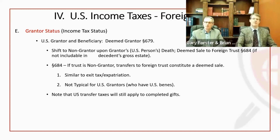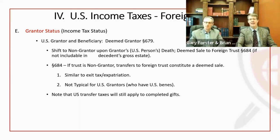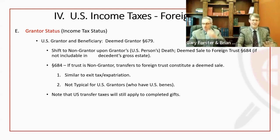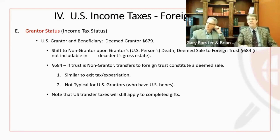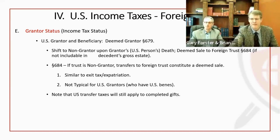However, if you have a U.S. grantor and U.S. beneficiaries, the deemed sale is delayed — the trust is treated as a grantor trust for the U.S. owner until that individual dies, meaning it's disregarded for income tax purposes until death. At death, you get the mark-to-market deemed sale. This is purely on the income tax side — it doesn't affect estate and gift tax, which is a separate analysis. You might have a completed gift and filed a gift tax return, yet this income tax issue still applies.